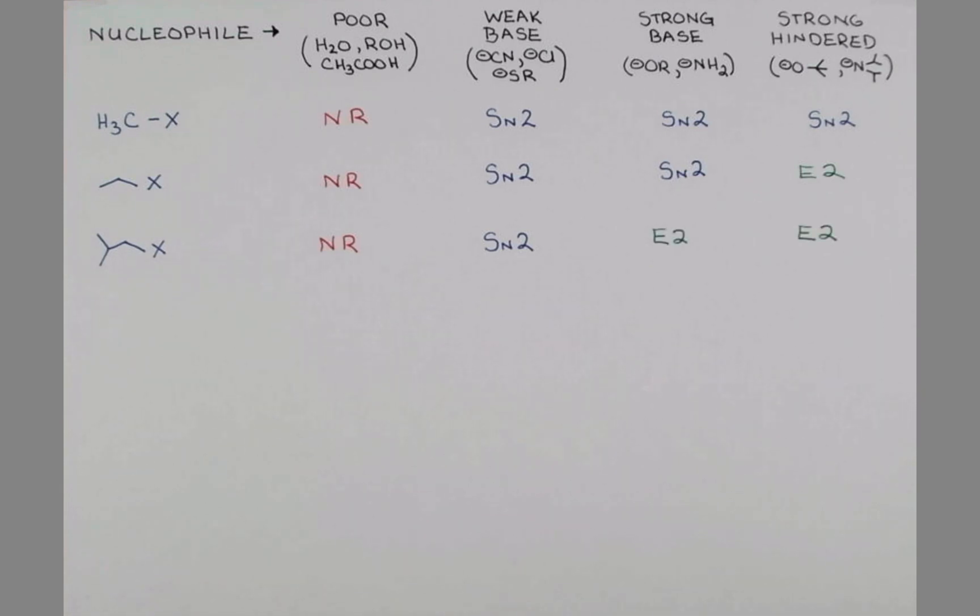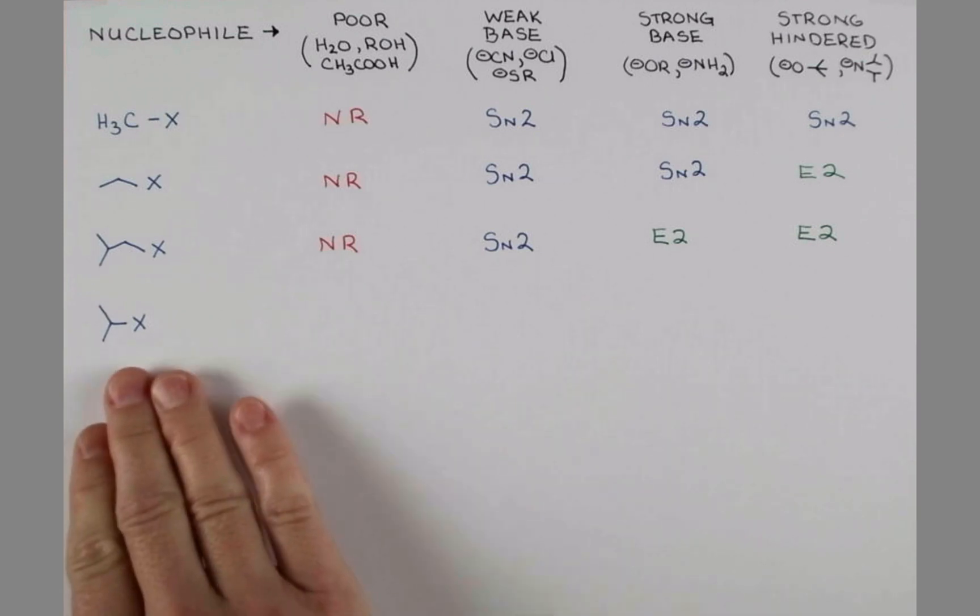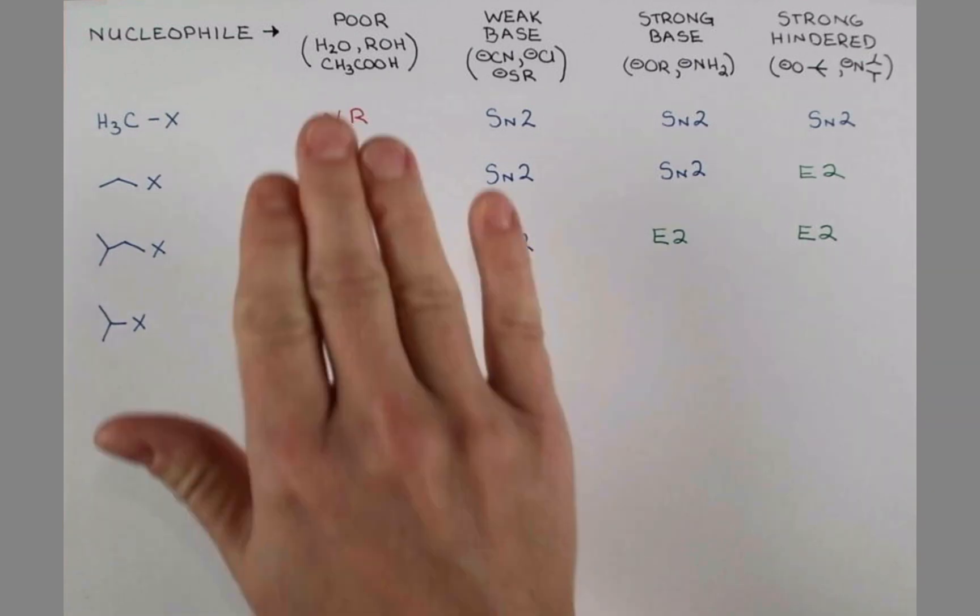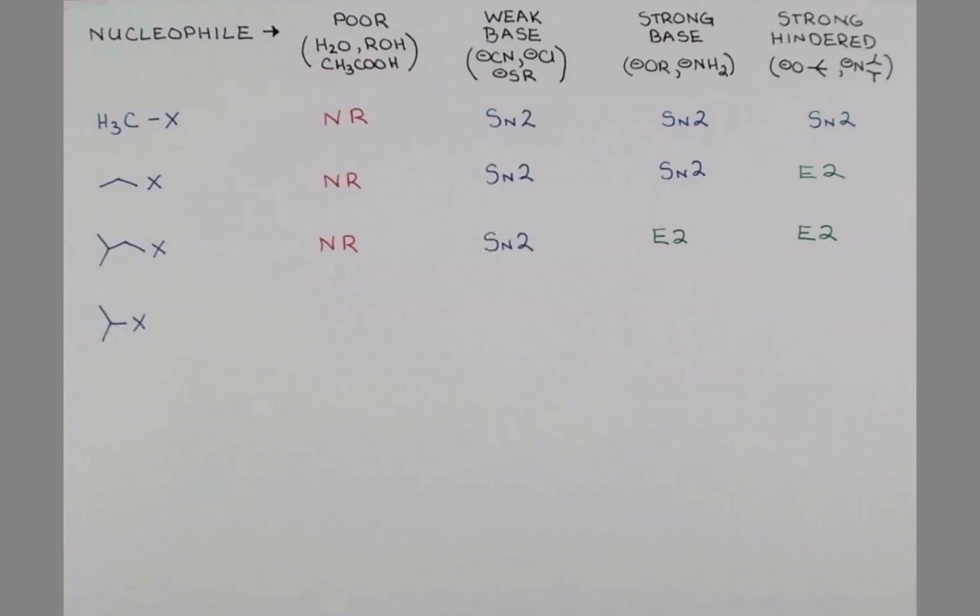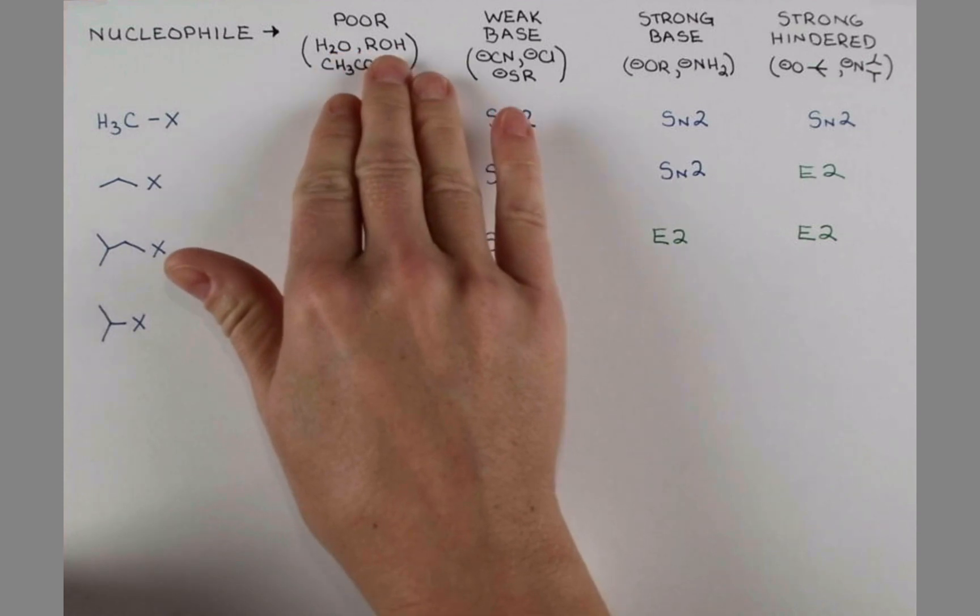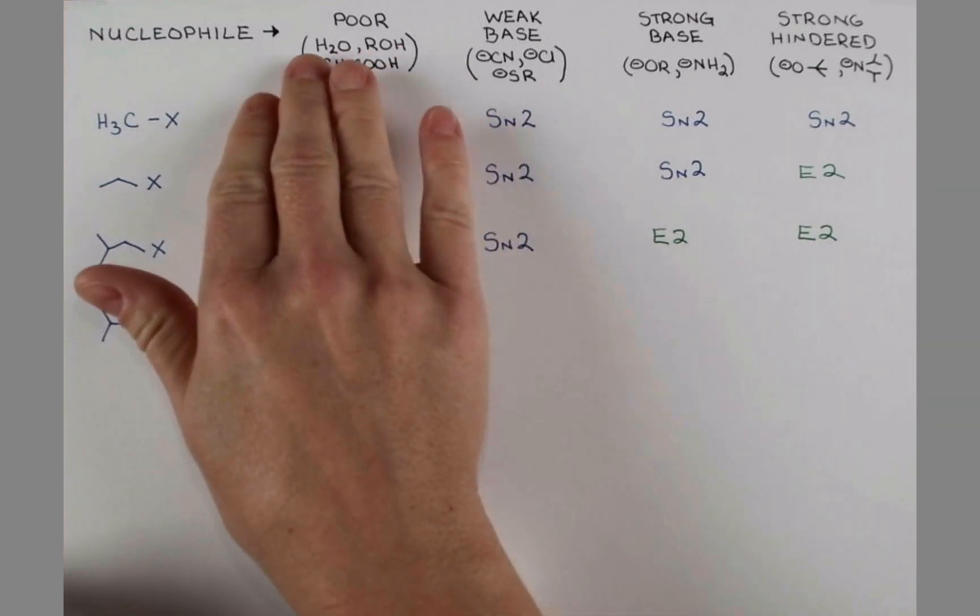Let's move on to secondary substrates now. We're getting into the realm of where stable carbocations can form. So when we have a poor nucleophile, which you should notice is actually also a polar protic solvent—acetic acid, water, alcohols—this is when we're going to start getting some SN1 reactions going on.